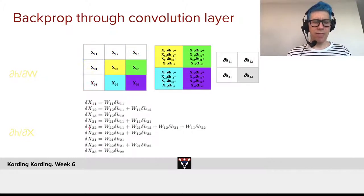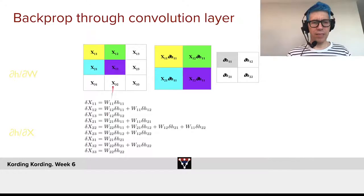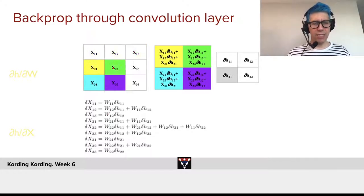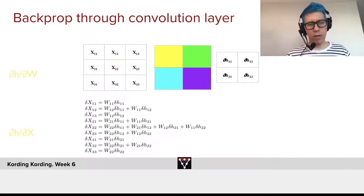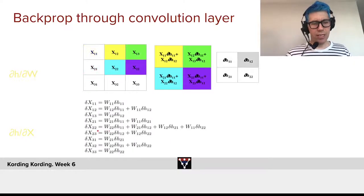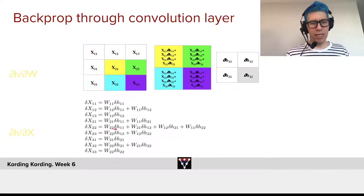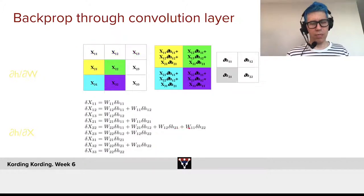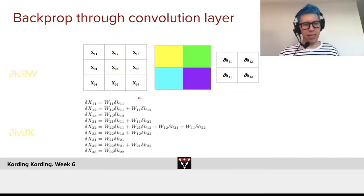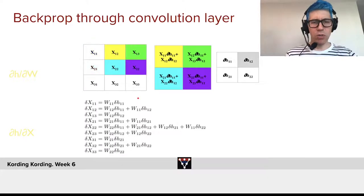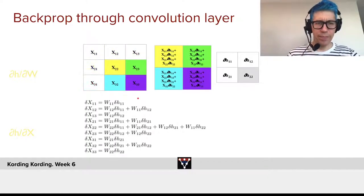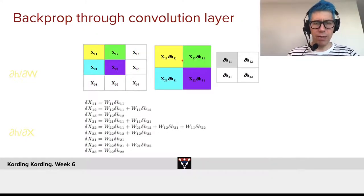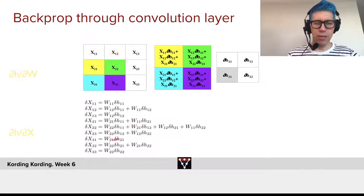And now this means that we have this as the gradients. Look, this x2, 2, 2 is going to be used by all four locations, that's why the derivative after it has four different terms. Now you see each of the four outputs has an influence on that. The others always have at most two of them. But this way, we can basically calculate the derivatives.